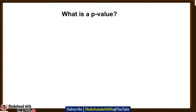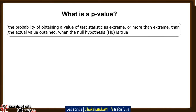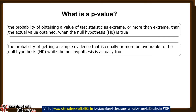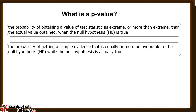Starting with what is p-value: the p-value is the probability of obtaining a value of test statistic as extreme or more extreme than the actual value obtained when the null hypothesis is true. In simple terms, given a null hypothesis and sample evidence with sample size n, the p-value is the probability of getting a sample equal to or more unfavorable to the null hypothesis while the null hypothesis is actually true.